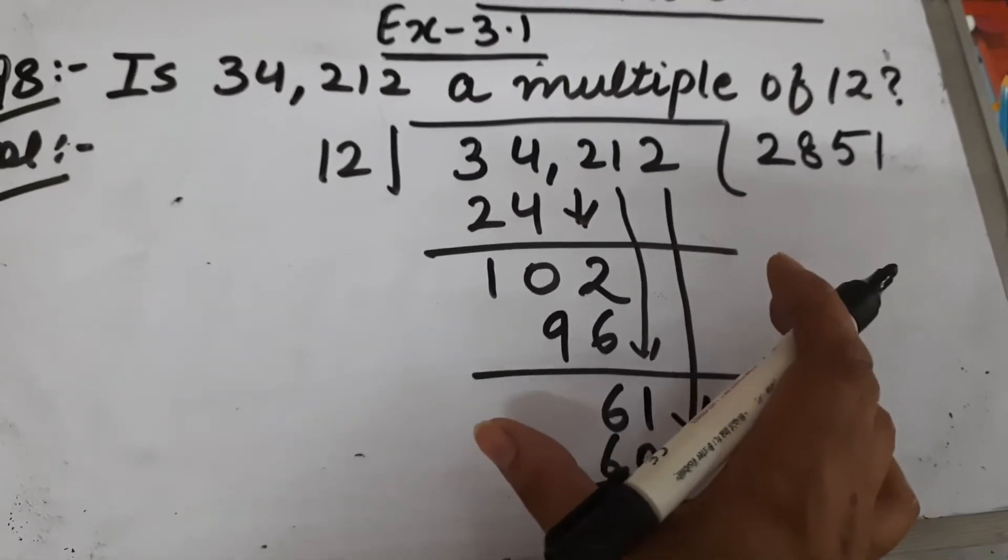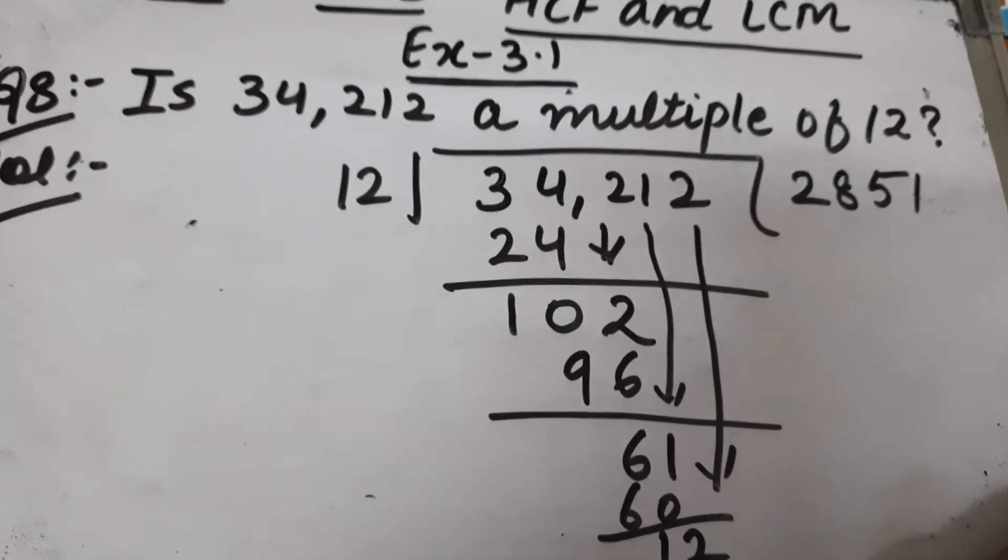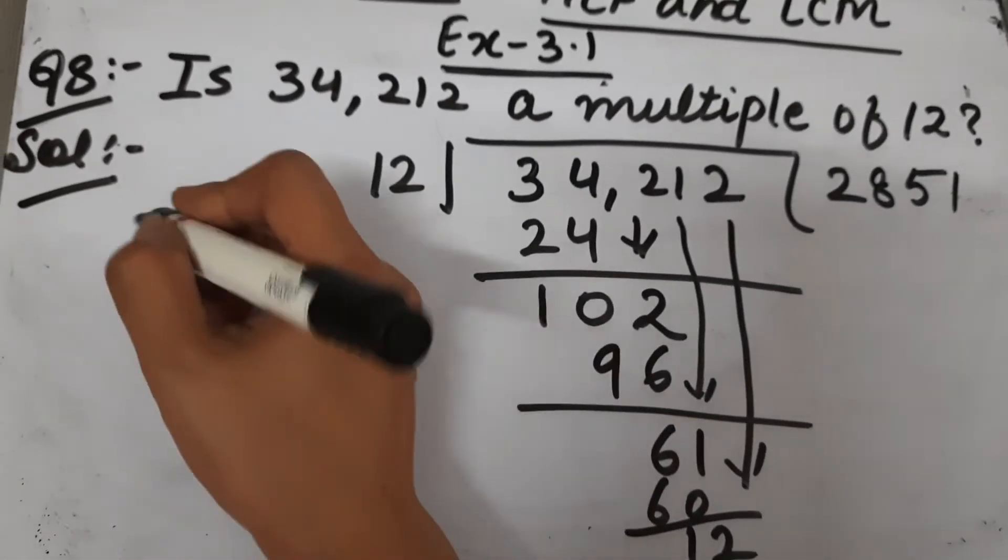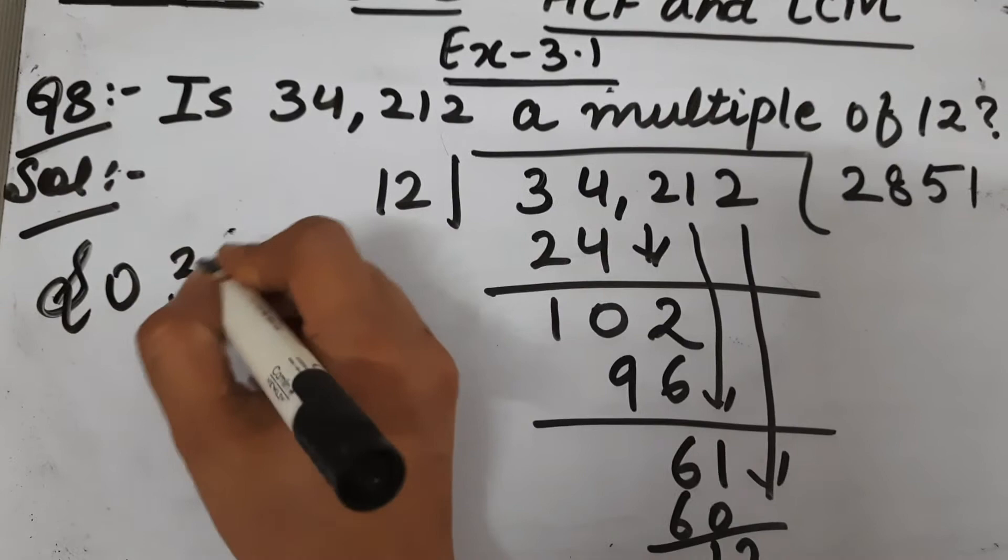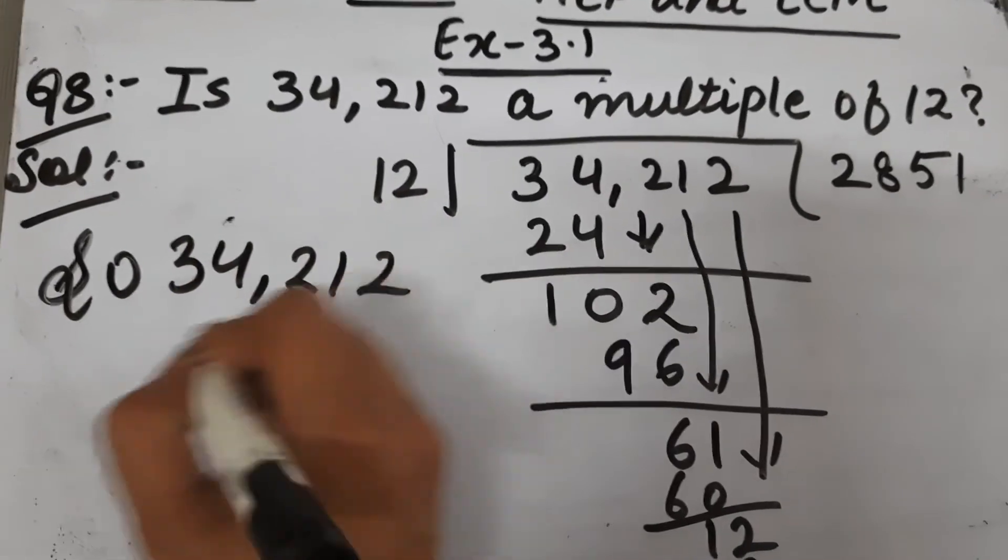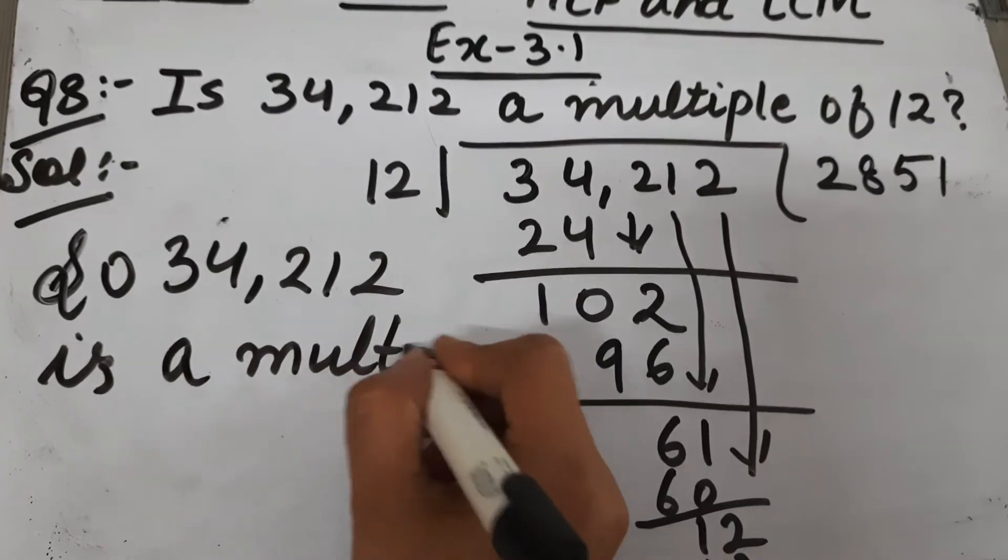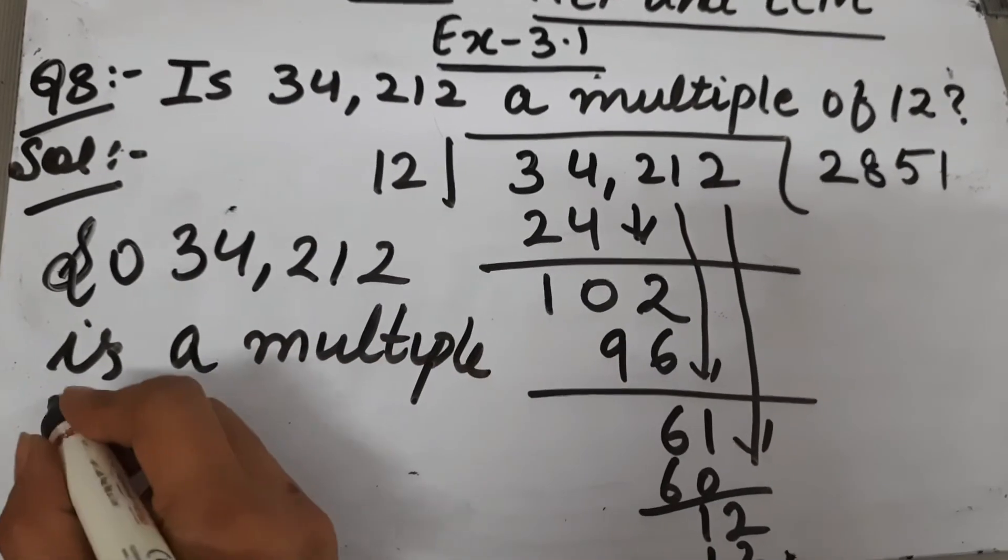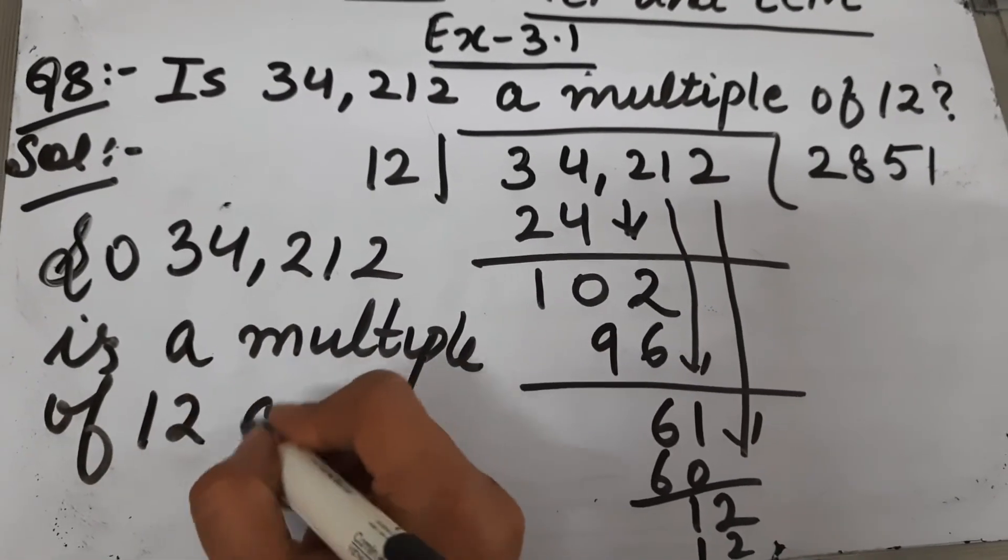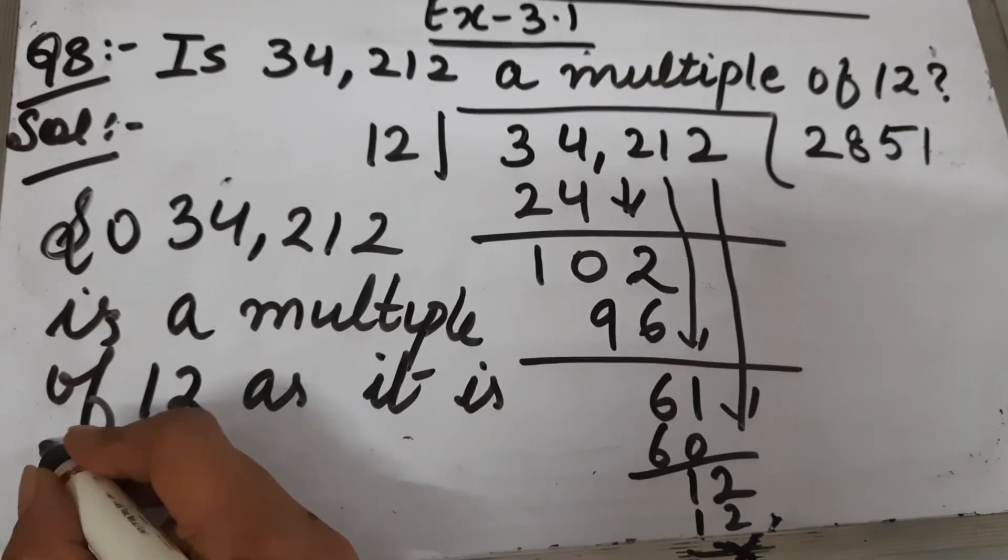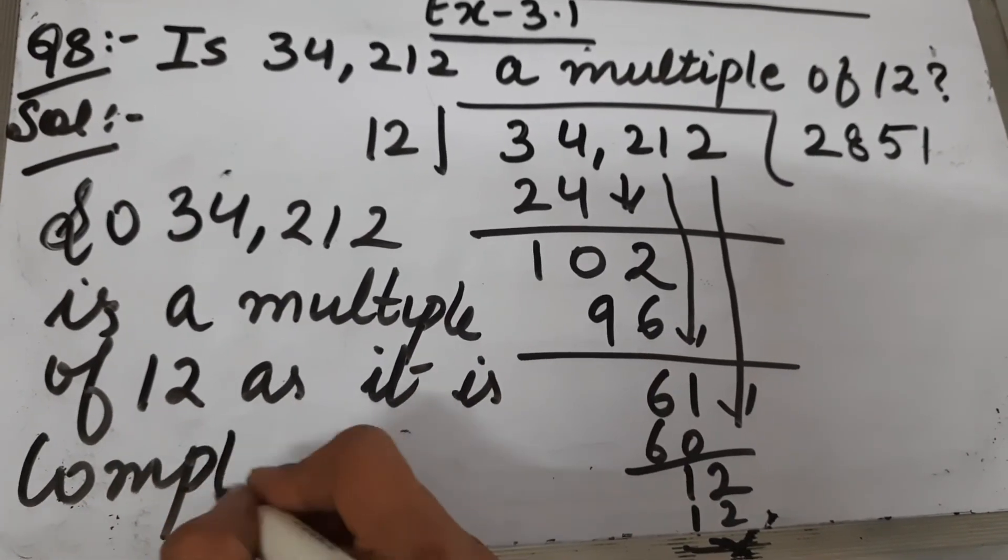That means 34,212 is completely divisible by 12, so 34,212 is a multiple of 12, as it is completely divisible by 12.